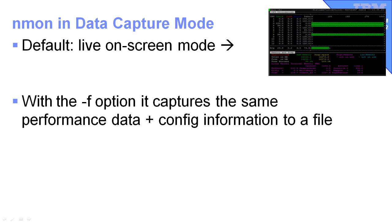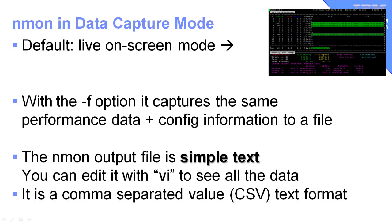By default, if you just type in the NMon command, it puts it live onto the screen. If you use the minus F option, it captures the same performance data and a whole bunch of configuration information into a file. The NMon output file is a simple text file, so you can edit it with the VI editor and see all the data. It is also a comma separated values file, or CSV file, and that means your standard spreadsheets can understand that format, and they can put all the heading lines and the actual numbers into the cells of a spreadsheet.